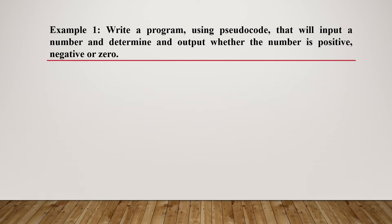Example 1: Write the program using pseudocode that will input a number and determine whether the number is positive, negative, or zero. We have to decompose our problem to see what we need to do. Firstly, we have to input a number, so we write the pseudocode: INPUT num.